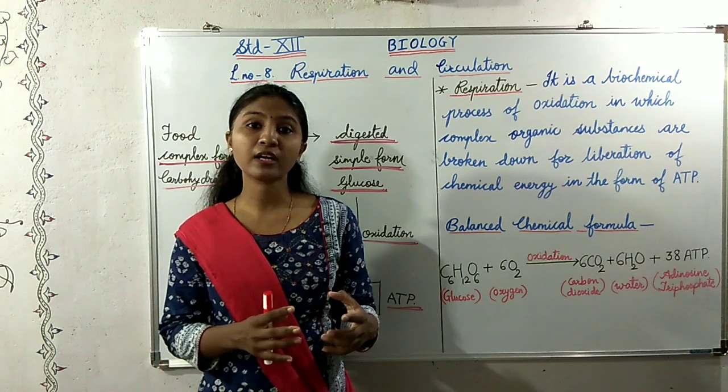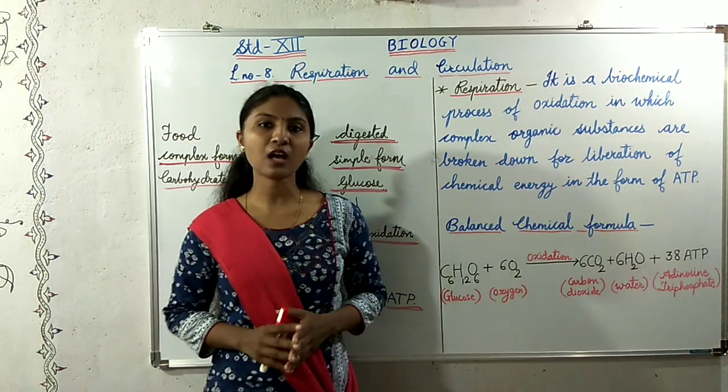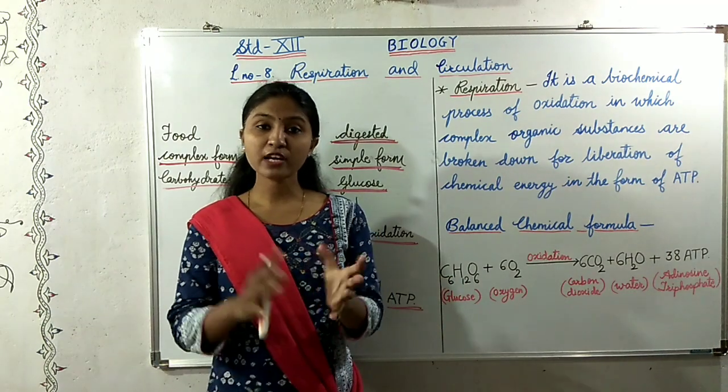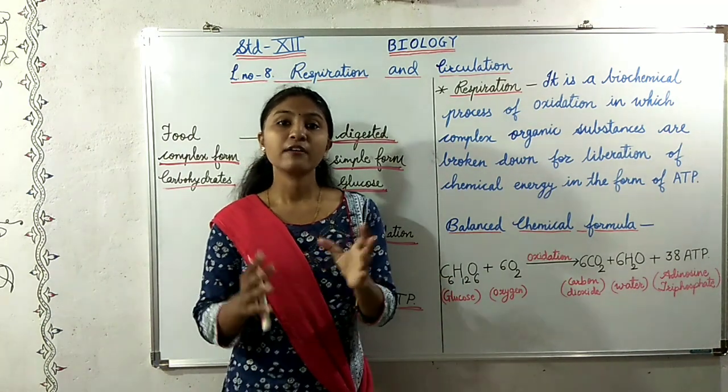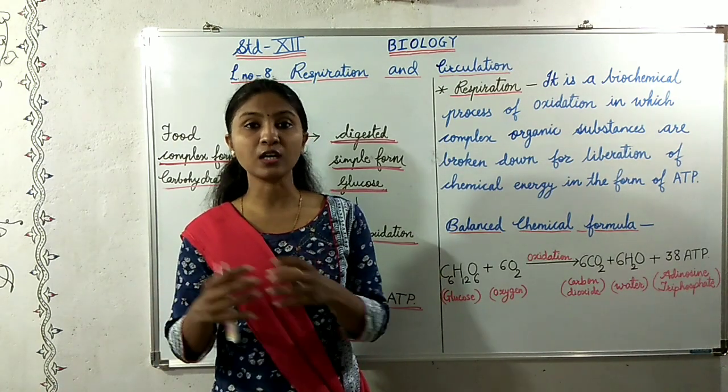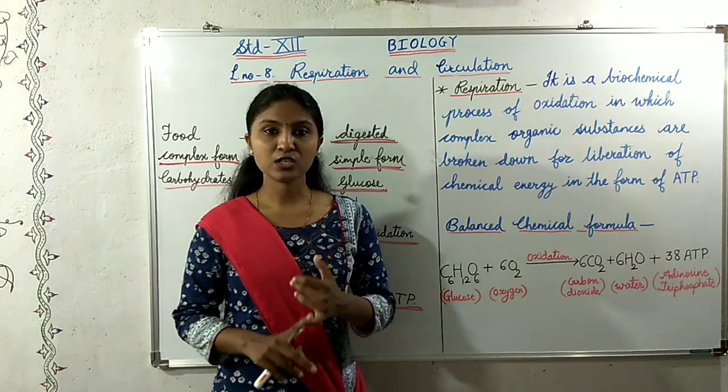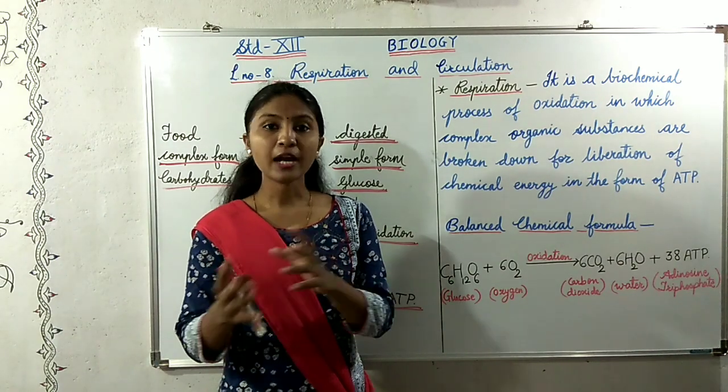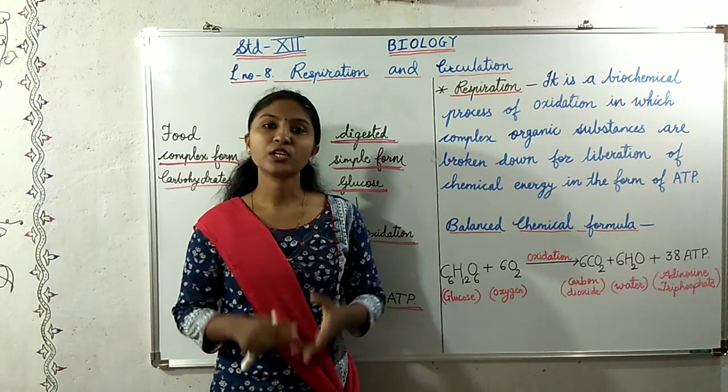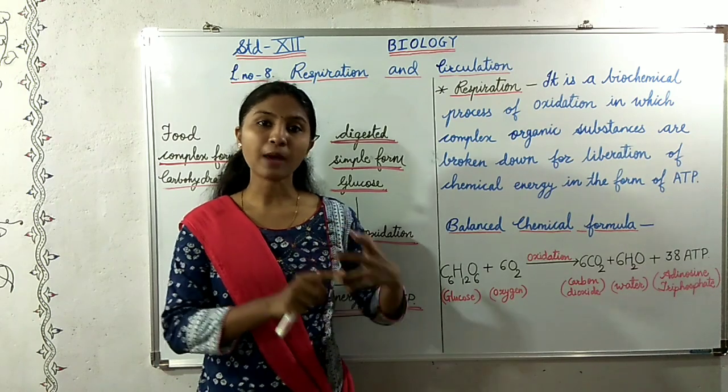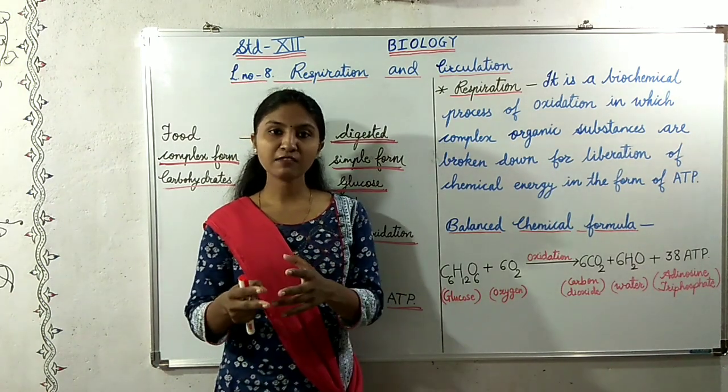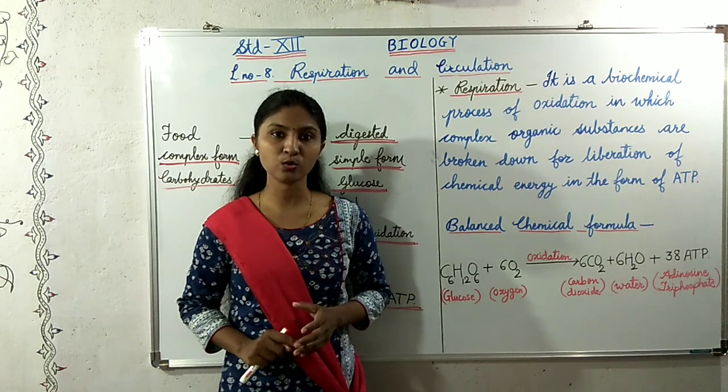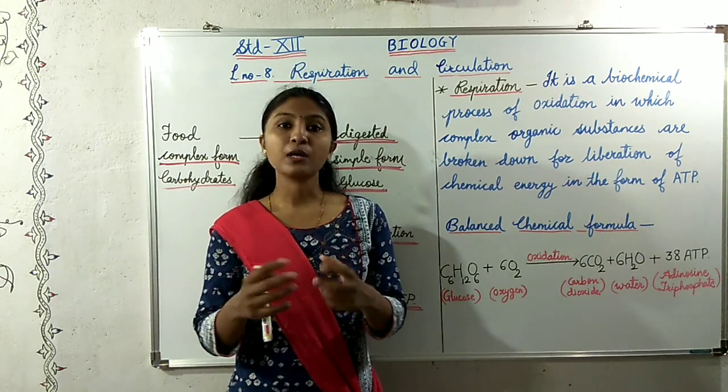Now for this respiratory exchange process to occur properly, some things are necessary. First thing, the respiratory surface must be large, or the area of the respiratory surface must be large. Second thing, the respiratory surface should be thin, highly vascular, and permeable to allow the exchange of gases. Highly vascular means it should be rich in cells and vessels through which gases can exchange easily.